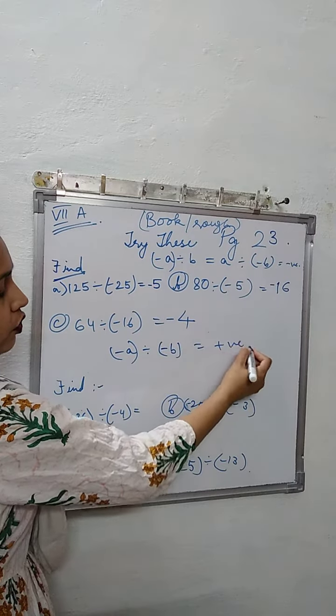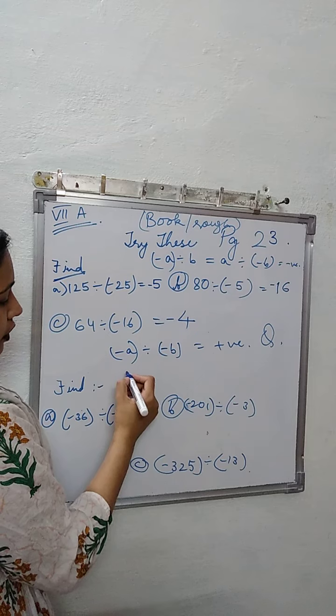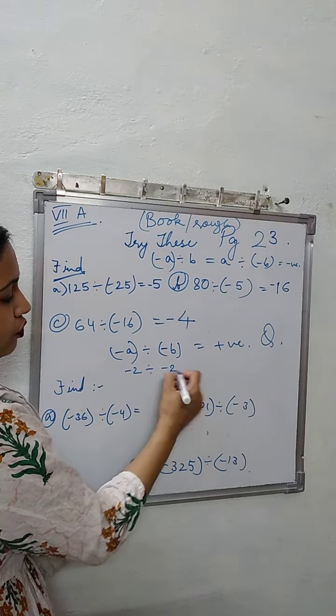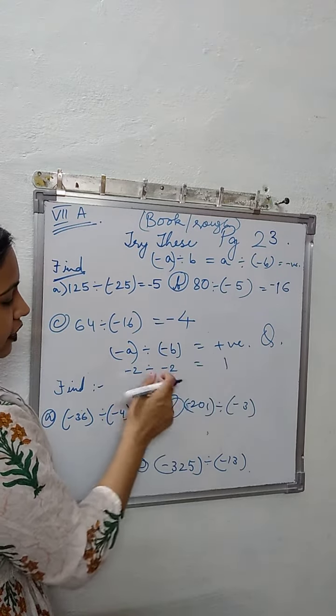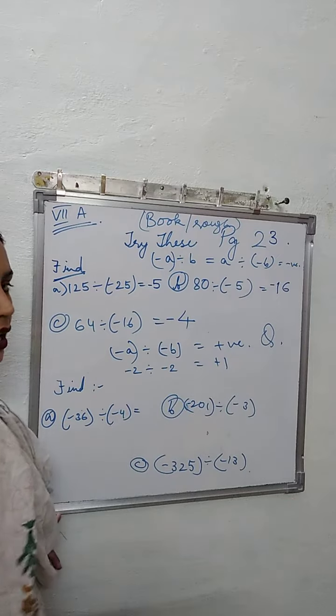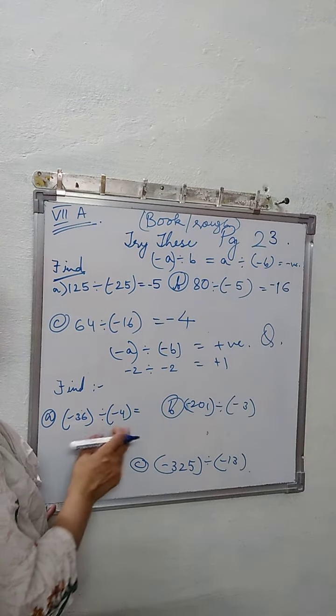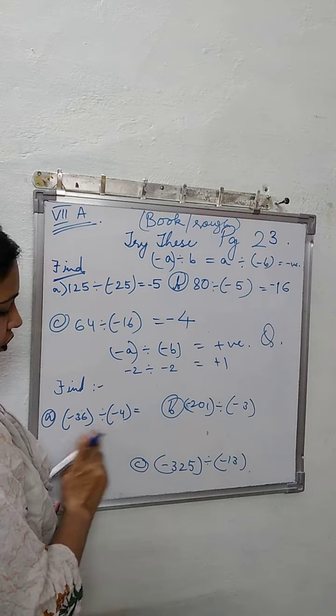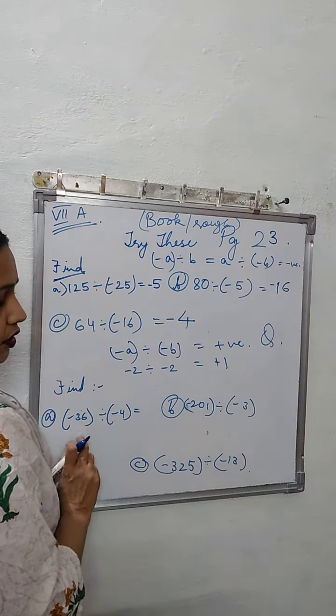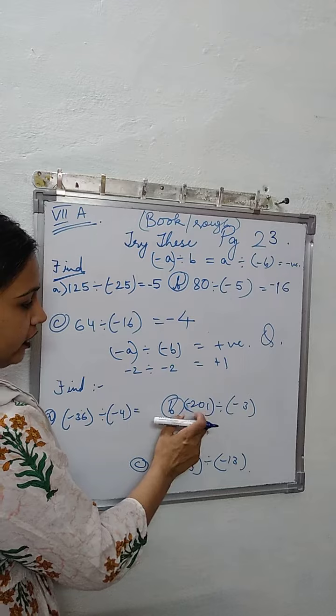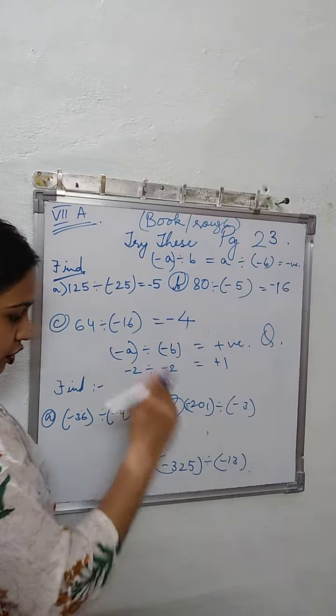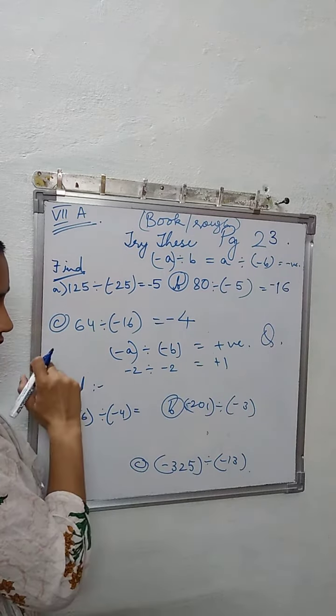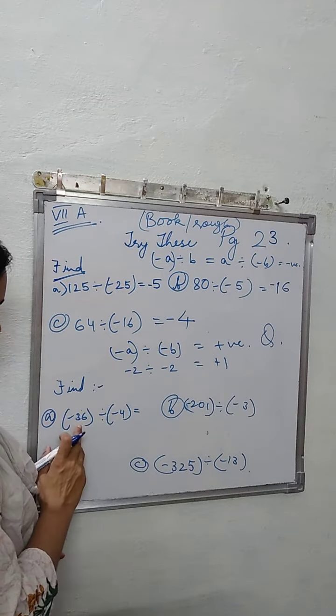So the quotient is positive. Like -2 divided by -2, answer will be 1. Minus minus get cancelled, so answer will be plus 1. So here both will be positive. When both the dividend and the divisor are negative, the quotient is positive.